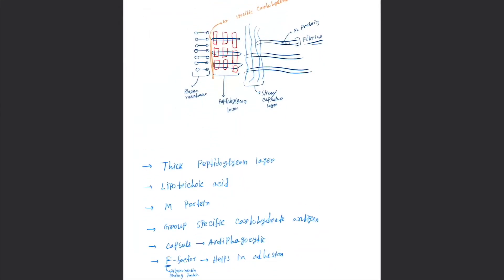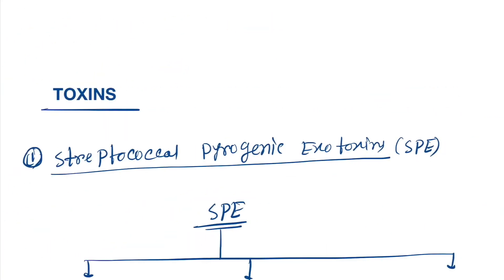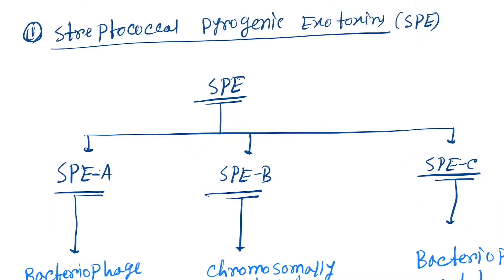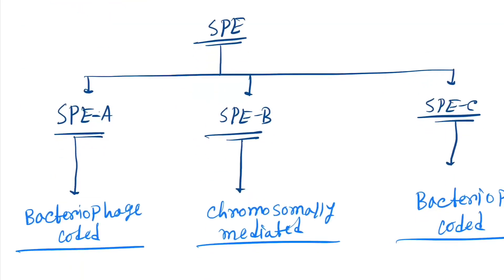Next one is the capsule. Here you can see the capsule and the F factor which helps in adhesion. Now come to the toxins. First one is the streptococcal pyrogenic exotoxin.